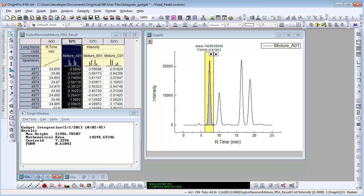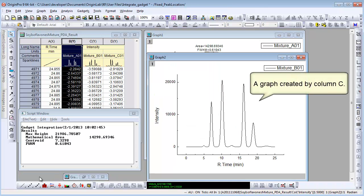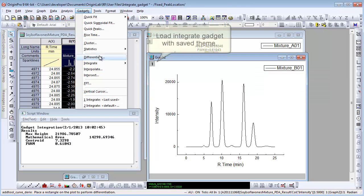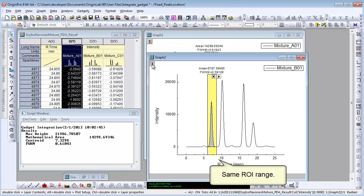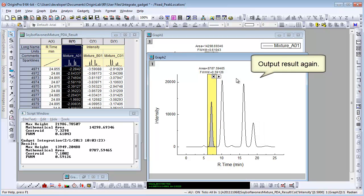Here is a graph plotted by another chromatography data in column C. Let's load Integrate Gadget again. The saved theme shows as a pop-up menu, so this time let's choose it. We can choose New Output directly to dump the area of the same region.